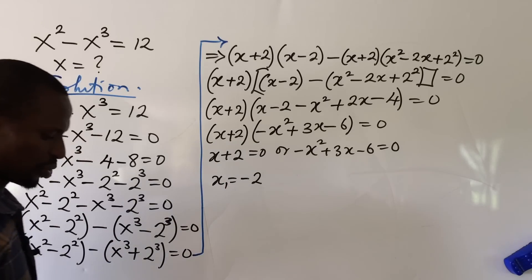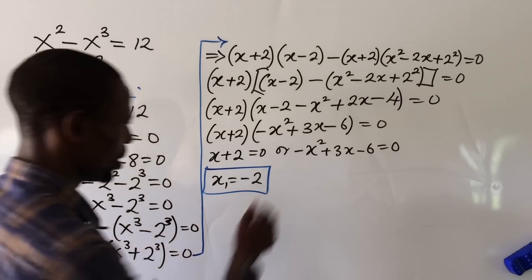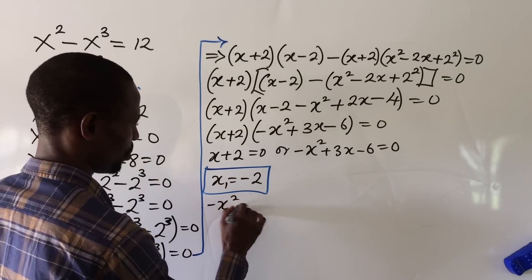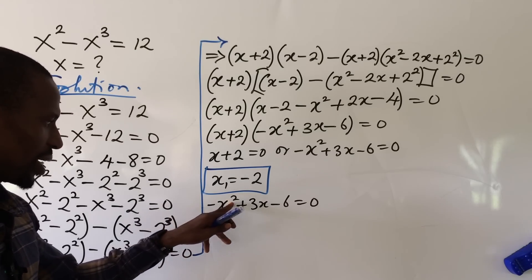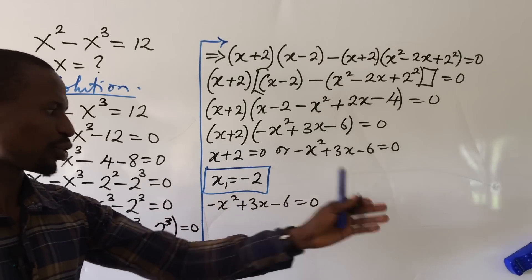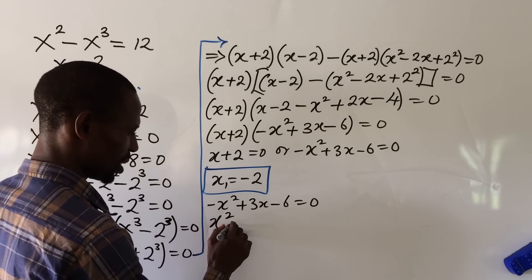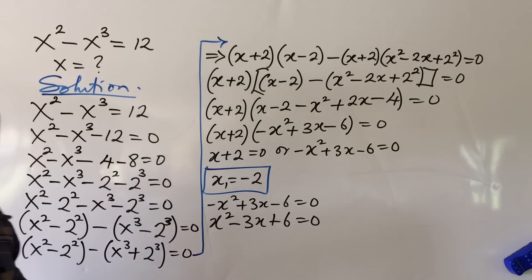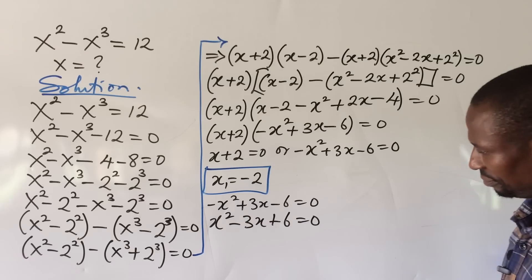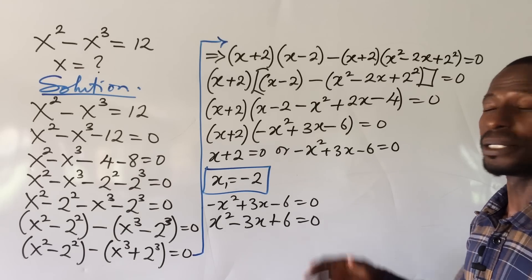Now handling the second equation: minus x squared plus 3x minus 6 equal to zero. We eliminate the minus by multiplying all through by minus 1, giving us x squared minus 3x plus 6 equal to zero. This is a quadratic equation. We cannot use the factorization method here, so we succumb to the formula method.